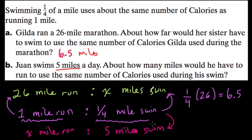Well, I have to multiply one-fourth by what to get 5? Multiply it by 20. So it's 20 groups of quarter-mile swims, which means I have to run 20 times 1 or 20 miles to burn the same number of calories. I'm just rescaling this ratio to match the different situations. Hope that helped.